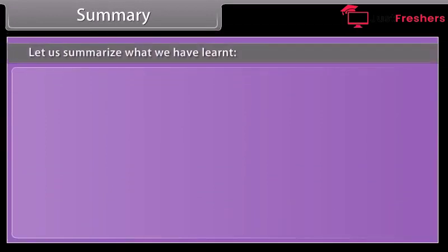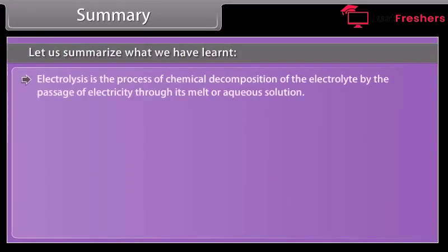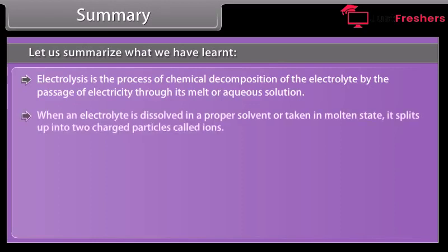Summary. Let us summarize what we have learned. Electrolysis is the process of chemical decomposition of the electrolyte by the passage of electricity through its melt or aqueous solution. When an electrolyte is dissolved in a proper solvent or taken in molten state, it splits up into two charged particles called ions.